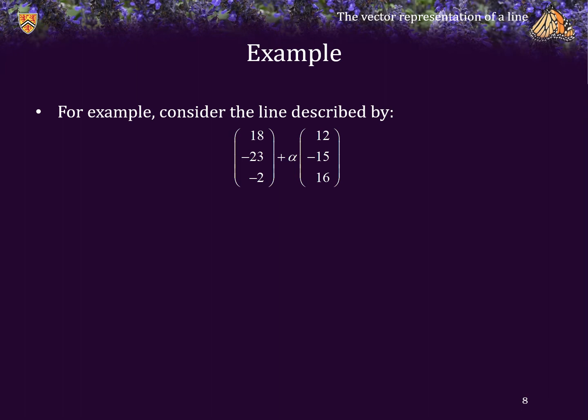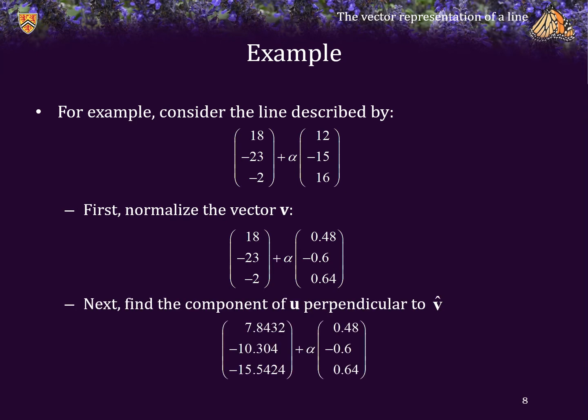For example, consider the line described by this vector representation. We would first normalize the vector v, and interestingly enough, we could actually choose either v or negative v—both of them work. Next, we find the component of u perpendicular to v̂, so we subtract from u the projection of u onto v̂. This is now our ideal representation, and it's unique up to plus or minus the vector v.